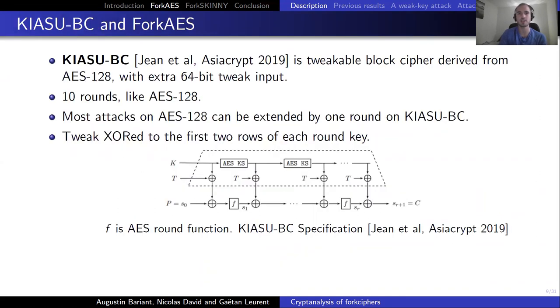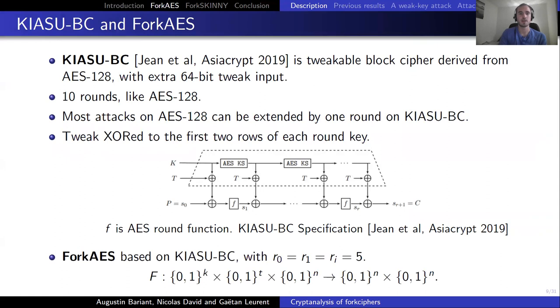KiasuBC was designed by Jean et al and presented in AzureCrypt 2019. It's a tweakable block cipher derived from AES-128 with an extra input, a 64-bit tweak. It has 10 rounds like AES-128, but a lower security margin, as most attacks on AES-128 can be extended by one round on KiasuBC. The only difference between KiasuBC and AES-128 is that the tweak is absorbed to the first two rows of the state at each key addition. So the tweak is controlled by the attacker, giving some more freedom.